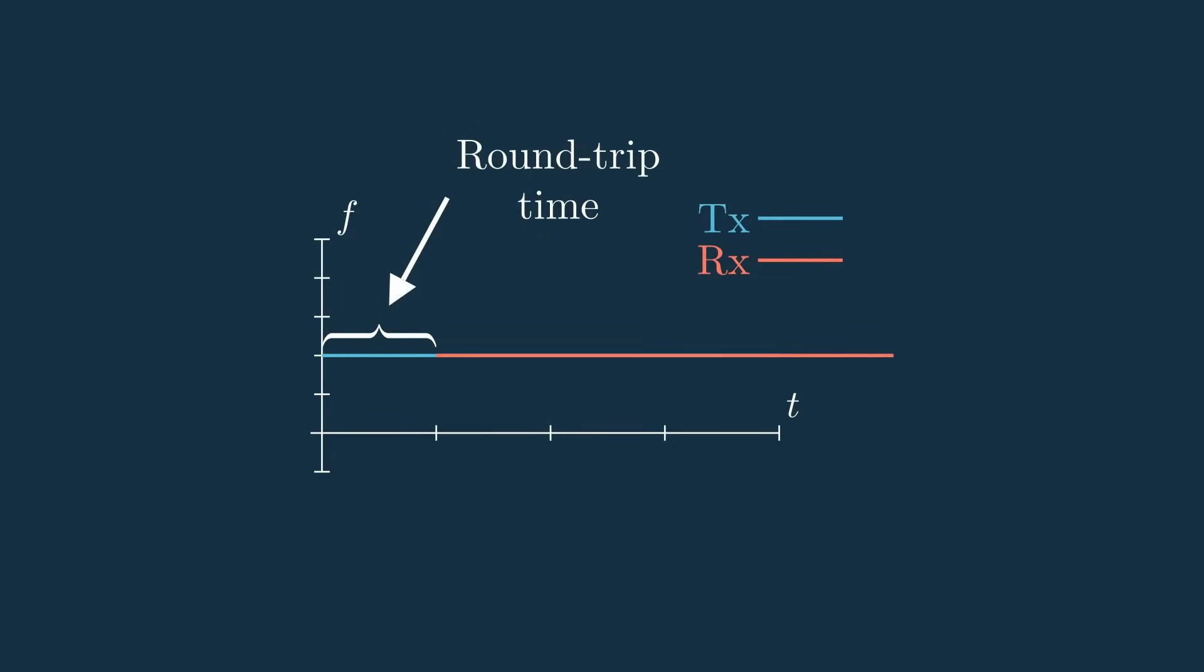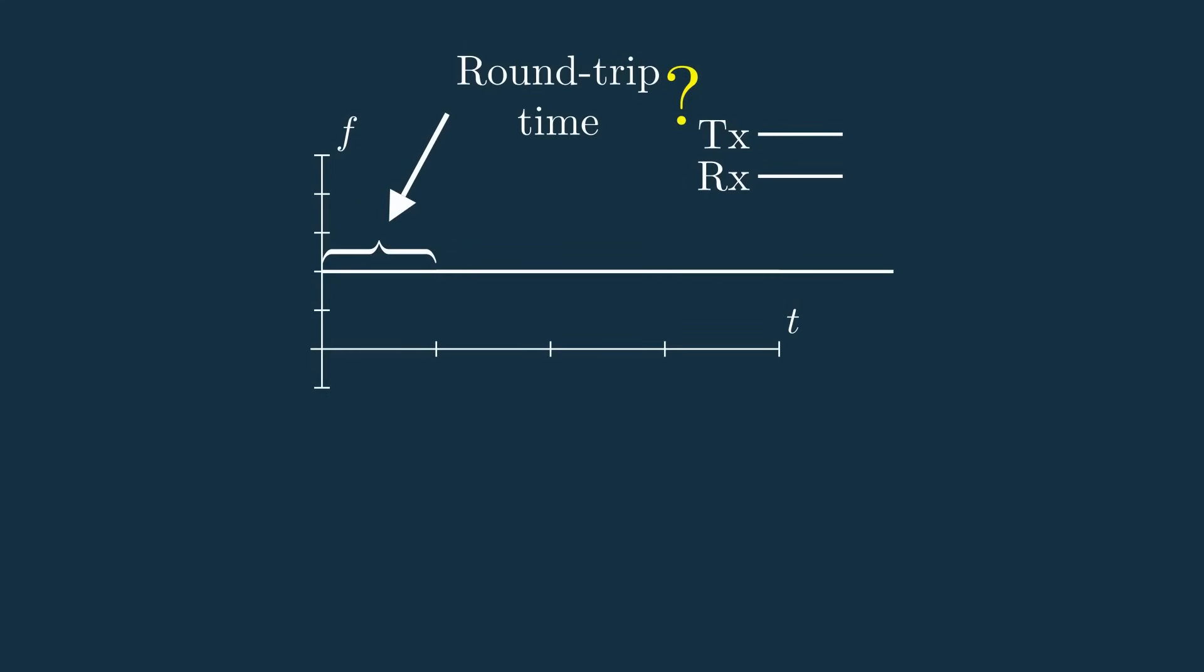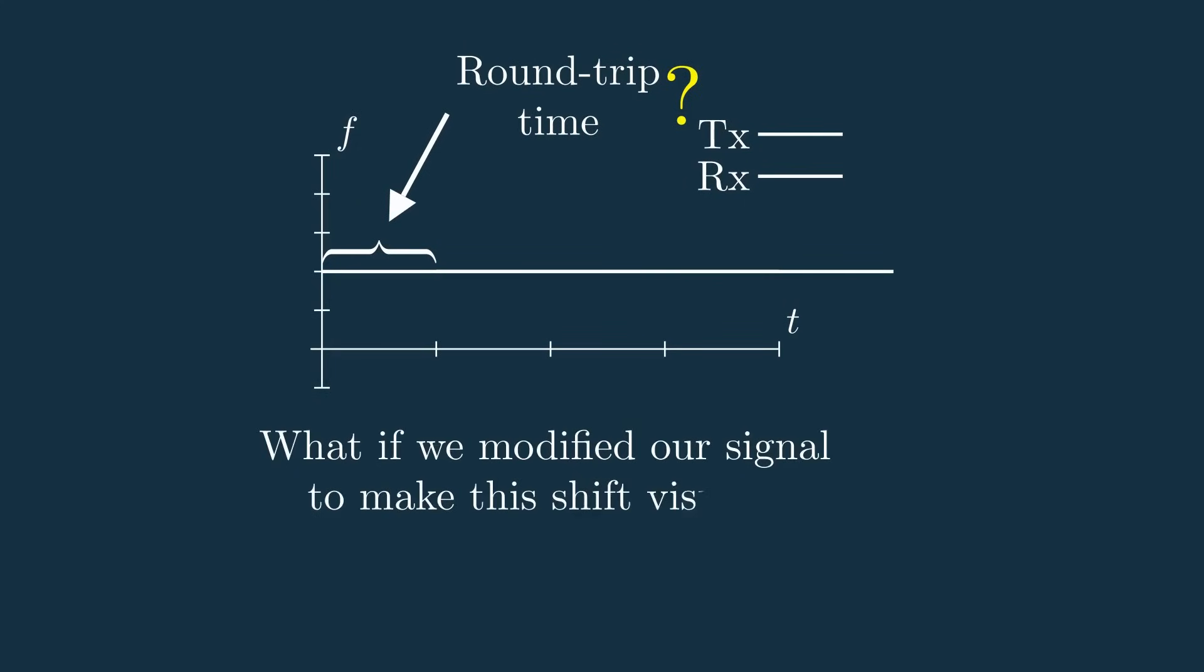Really though, if we get rid of these nice colors for visualization, these two signals are indistinguishable from one another, so we can't really tell that time difference. So, what if we modified our signal to make this shift invisible and actually be able to measure that time difference?